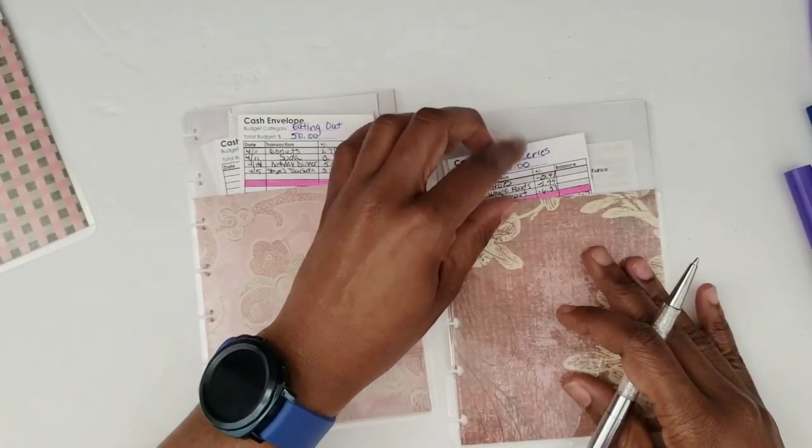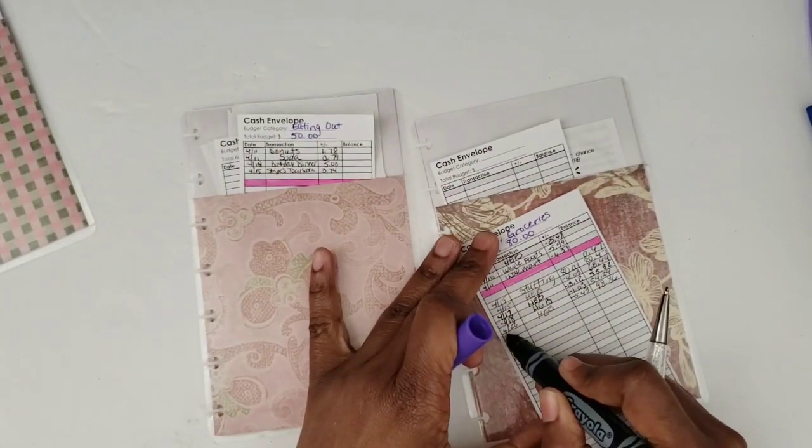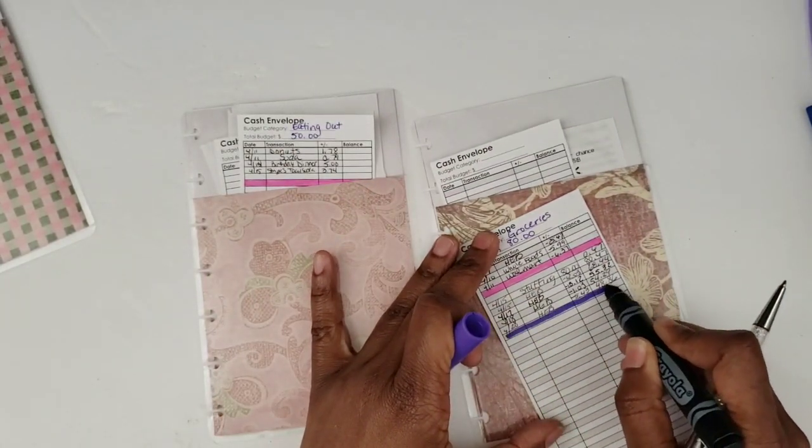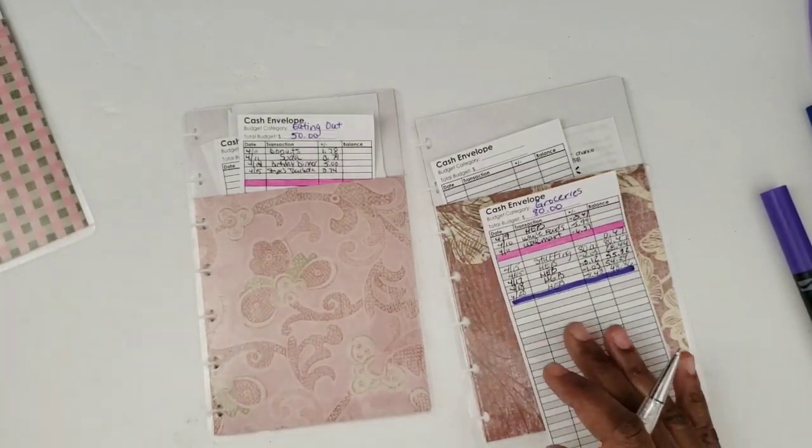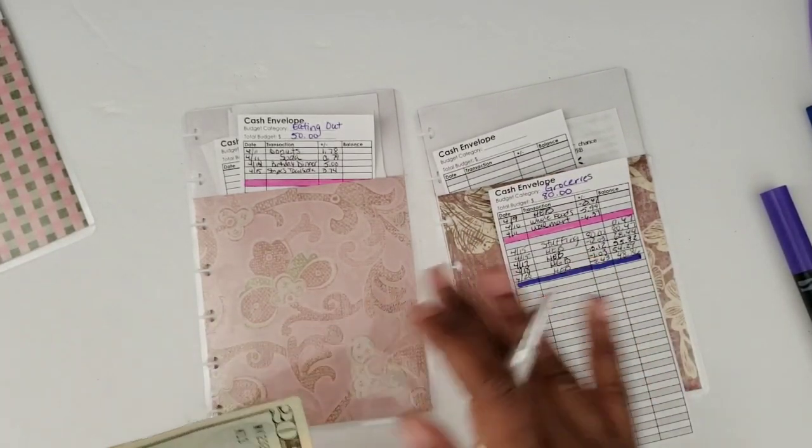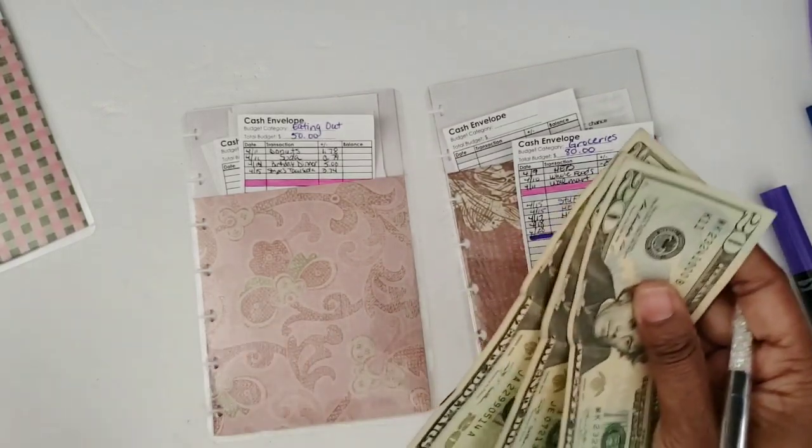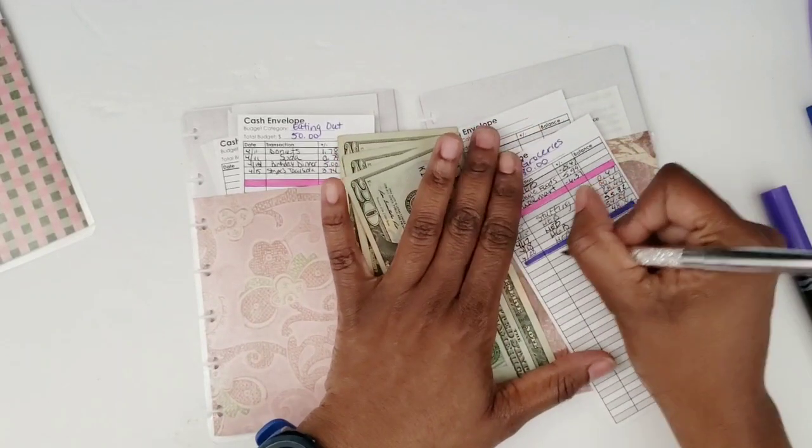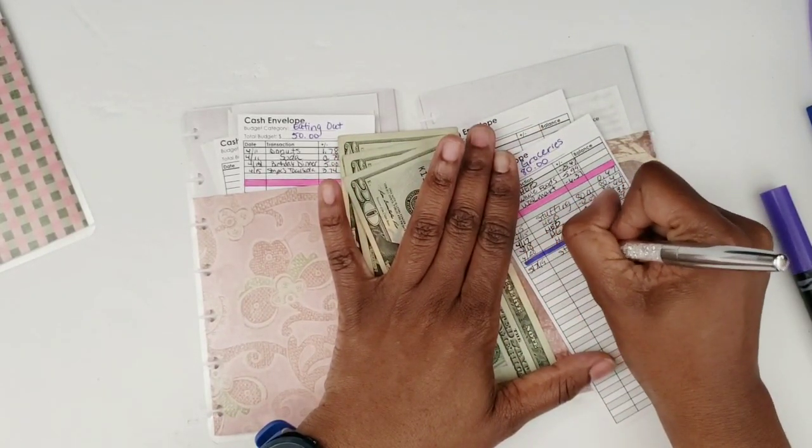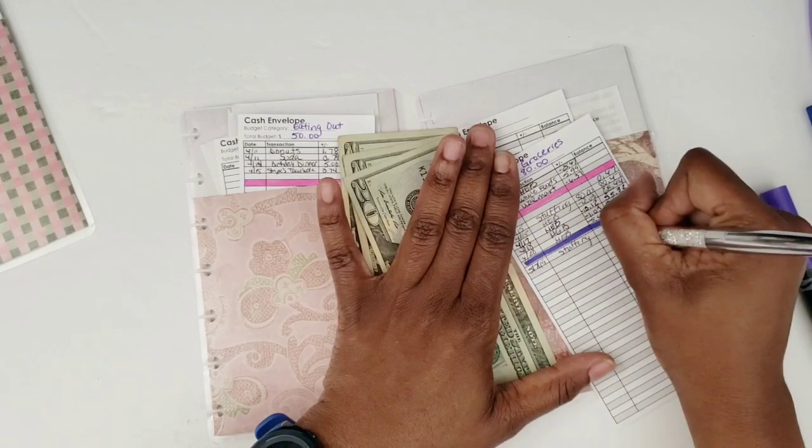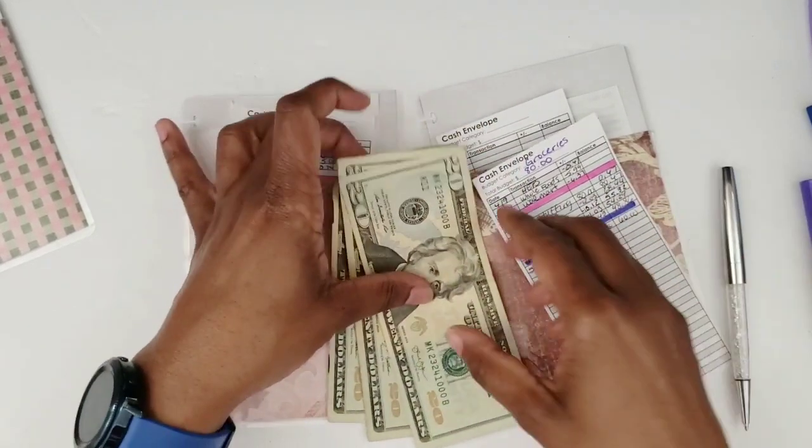Groceries - we're starting new with groceries because of the whole paycheck thing. I was within budget last week, the last time, which was good. We put eighty dollars. Usually if I've already spent twenty, so that's going to be sixty dollars. I'll put the date and put stuffing, and then we have sixty dollars.